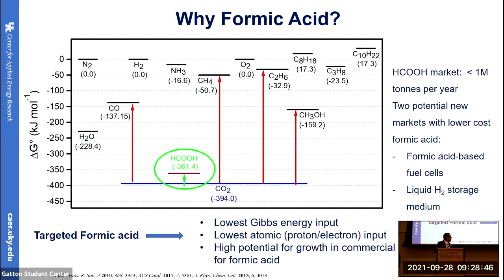Now the question is: why formic acid? Looking at this plot of Gibbs free energy for different molecules, we can say that formic acid is very close to carbon dioxide. So it needs the lowest energy input for conversion of CO₂ to formic acid. Also, it can be converted using very cheap materials — just water and a suitable catalyst.